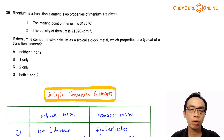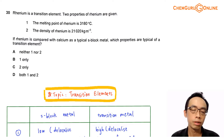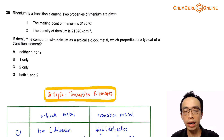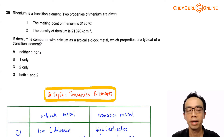Hi everyone, this is Maverick Poir, the chemistry guru. In this video, we want to discuss the suggested solution for 2021 A-levels H2 Chemistry, Paper 1, Question 30.